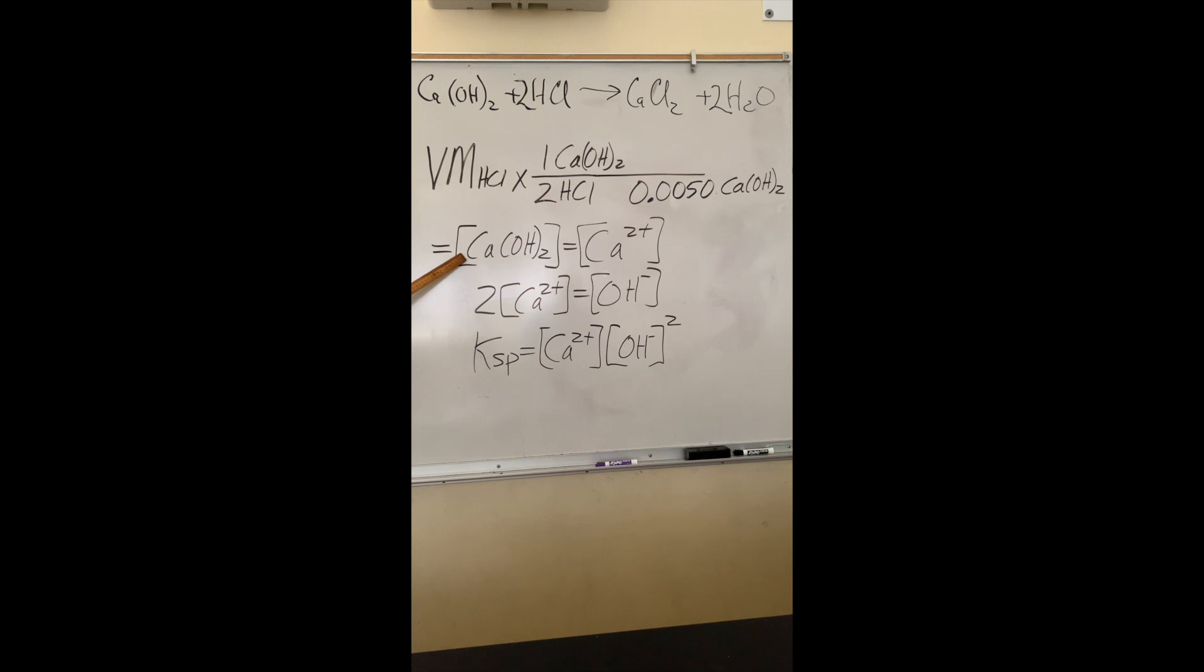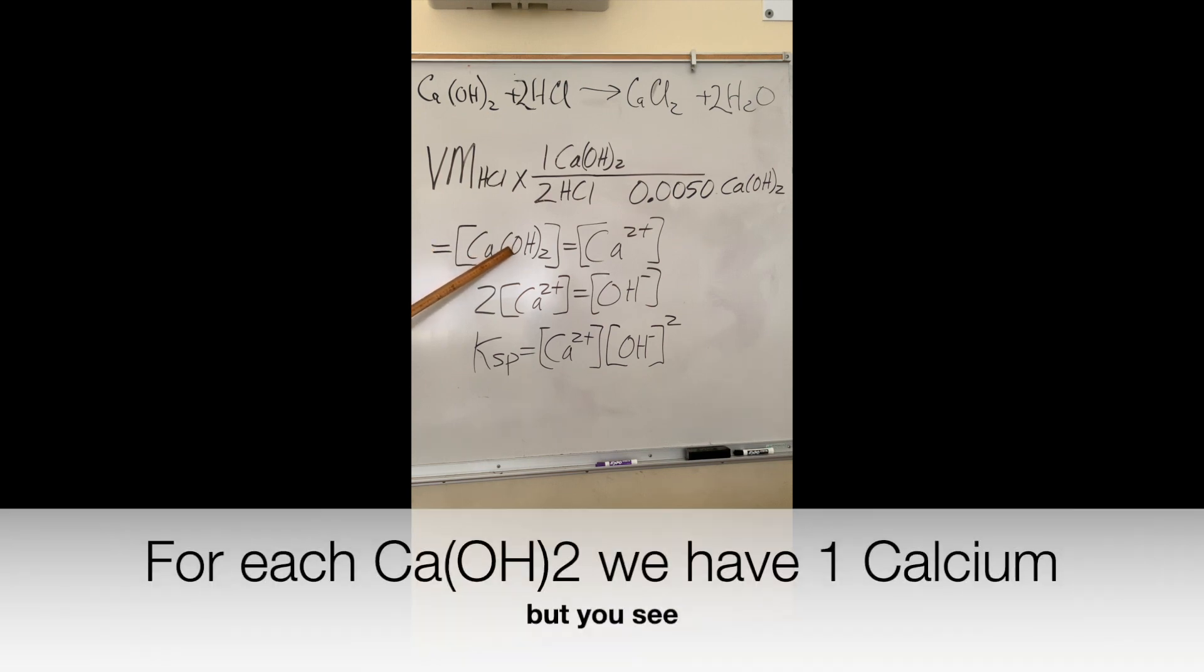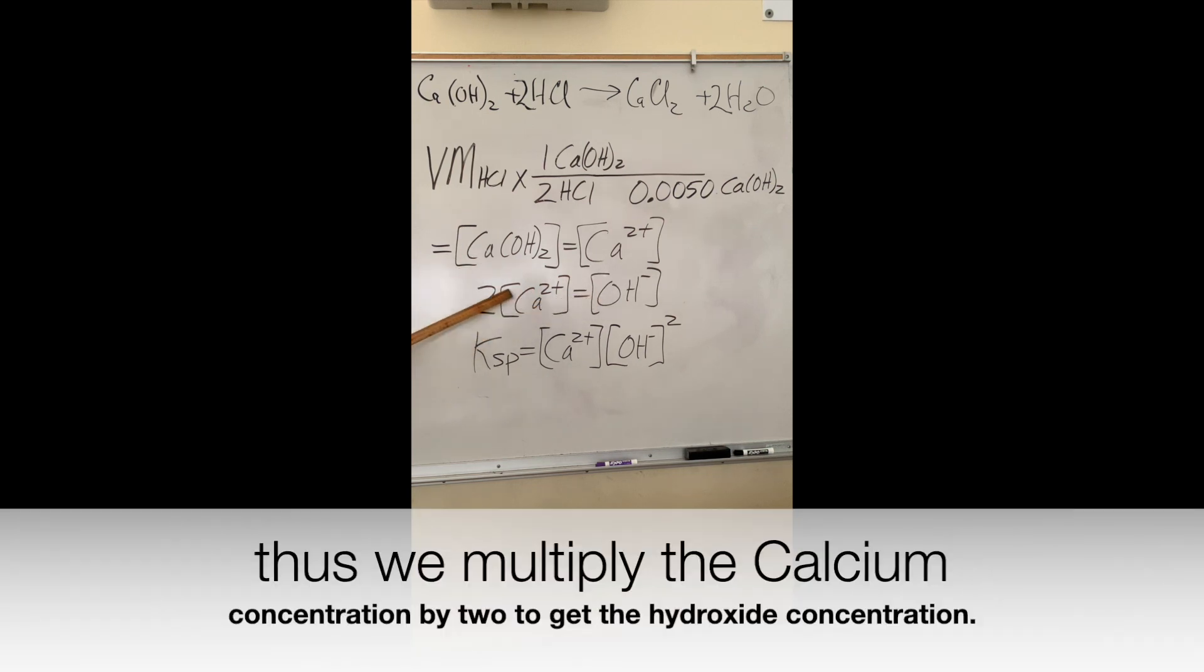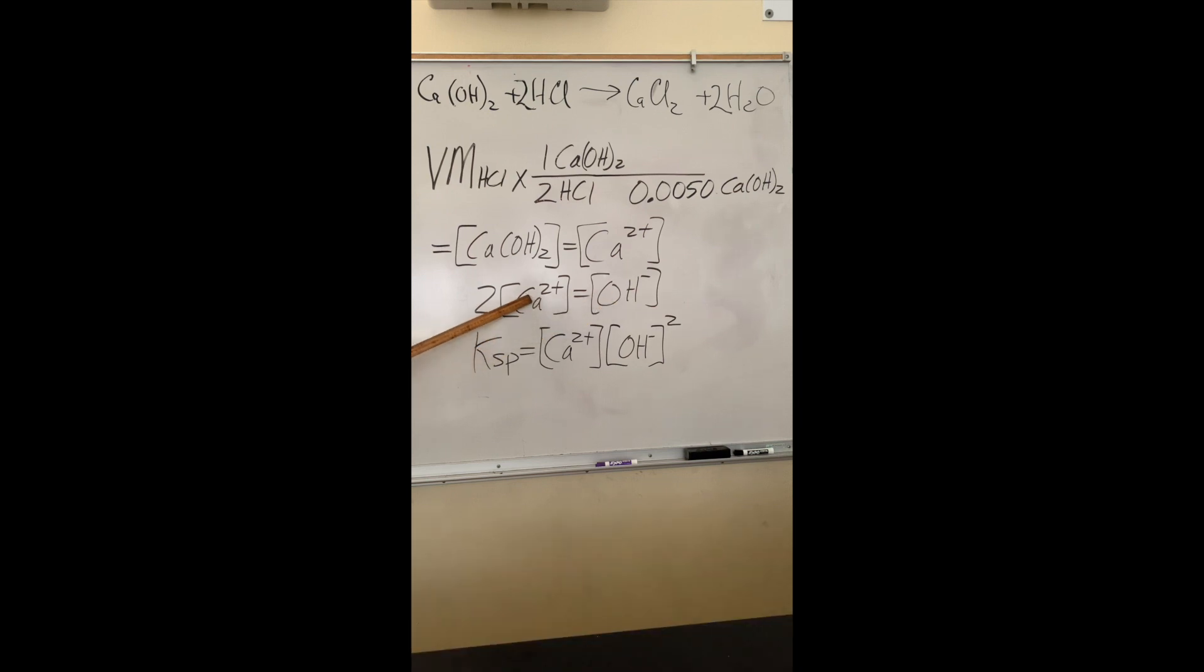To calculate the KSP, first we determine the concentration of each species. For each calcium hydroxide, we have one calcium. We see that for every calcium there are two hydroxides. Thus, we multiply the calcium concentration by two, or divide the hydroxide concentration by two to get the calcium.